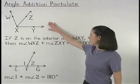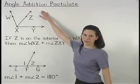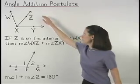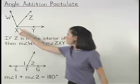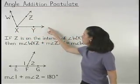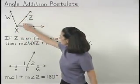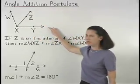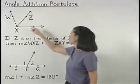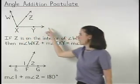Using the diagram shown, the angle addition postulate states that if Z is on the interior of angle WXY, then the measure of angle WXZ plus the measure of angle ZXY equals the measure of angle WXY.